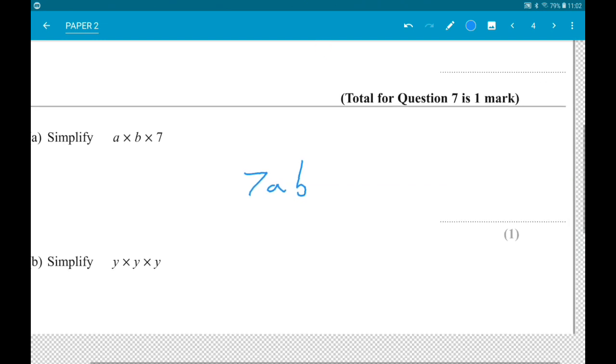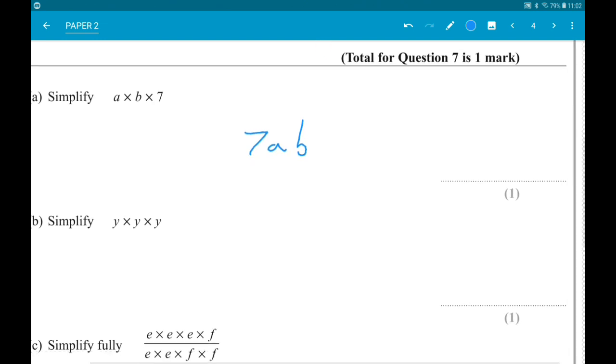Part B: Simplify Y times Y times Y. So Y times Y is Y squared, times Y again is Y cubed.